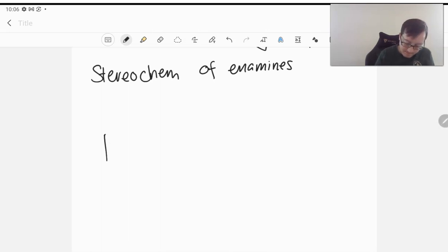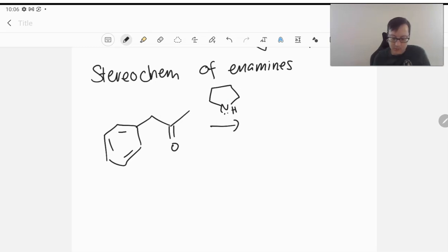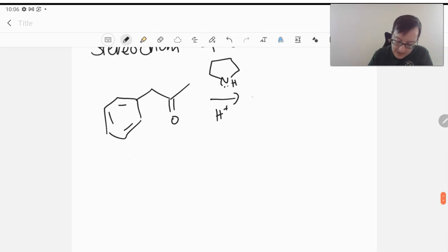For example, if we take the following ketone and we react it with a secondary amine, let's go ahead and use piperidine here. So we have our H, H plus. We're going to make an enamine because this is a secondary amine, right? It's got two carbon units. When we're looking at it,